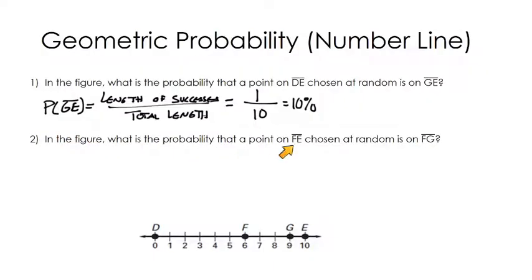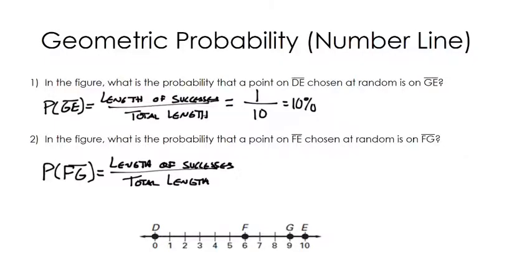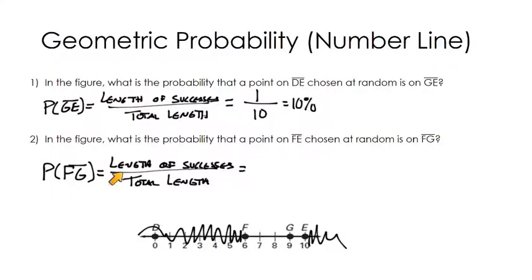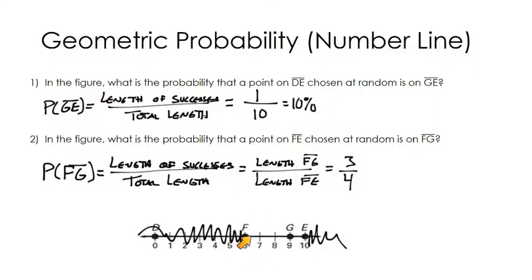What's the probability that a point on FE chosen at random is on FG? We have to think critically here — our total length is not the entire number line but only the length of FE. The length of our success is FG, and the total length is FE. FG has a length of 3 and FE has a length of 4, so there's a three-fourths or 75% chance that the point is on FG.